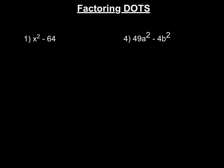The next type of factoring we're going to discuss is factoring the difference of two squares — we call that DOTS. So first of all, when you think about difference, difference means to subtract. So if you look at both of the examples here, like number one and number four, you'll see we have subtraction. We're taking the difference of two squares, and when I say that, I mean perfect squares.